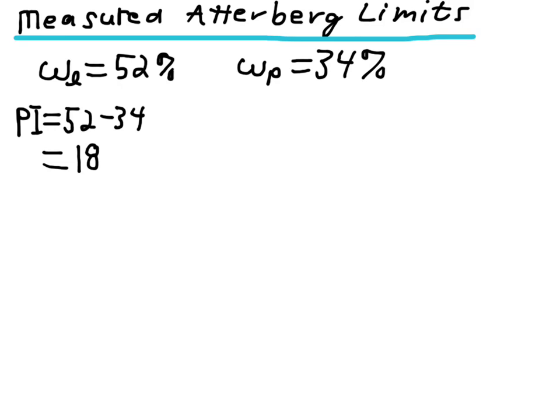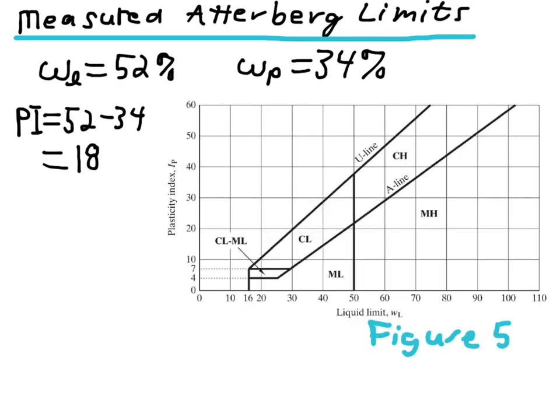So, now we can classify the fines using Figure 5.4. So, we go in at a liquid limit equal to 52, and we go into the plasticity index of 18, and we find that this soil plots below the A-line, so it's a silt. And then the group symbol of this soil must be GM. Notice that it doesn't matter whether it's a low-plasticity or high-plasticity silt. It's simply going to be a silty gravel.